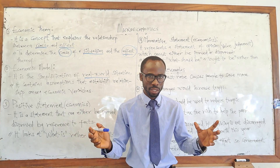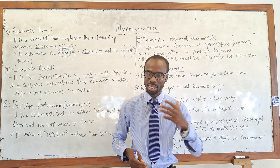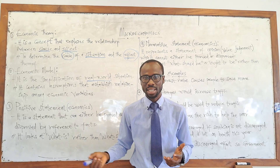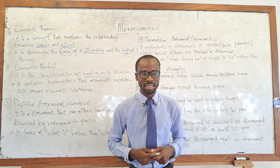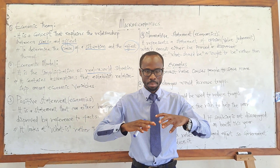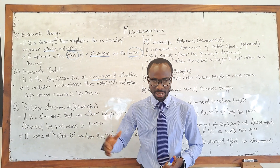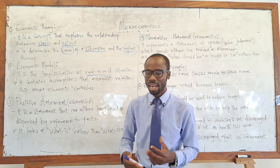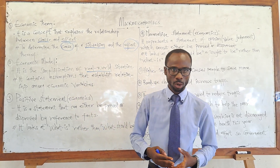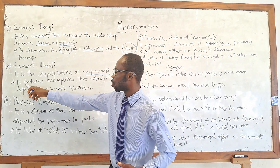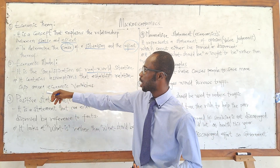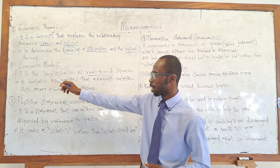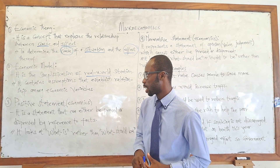While the theory focuses on the normative aspect of economics, the economic model looks at the mathematical, graphical, or tabular representation of the economic theory. The model looks at the visible or material aspect of the written statement — it is the abstract form of the economic theory. The main aim of the economic model is to establish relationships among economic variables.